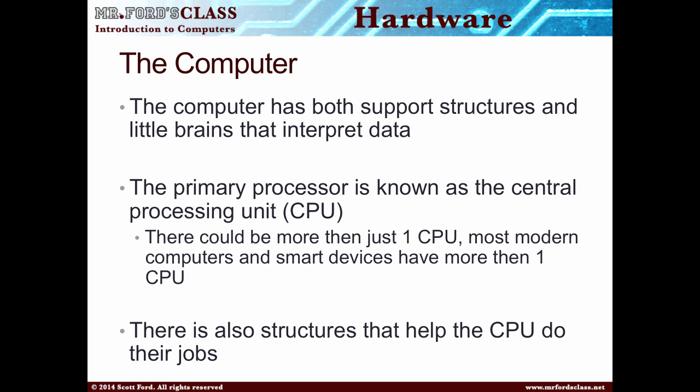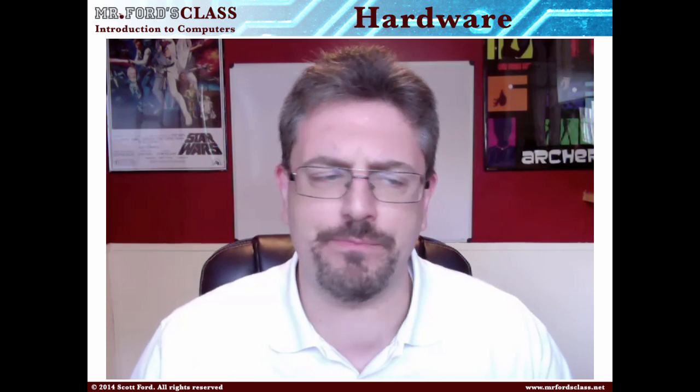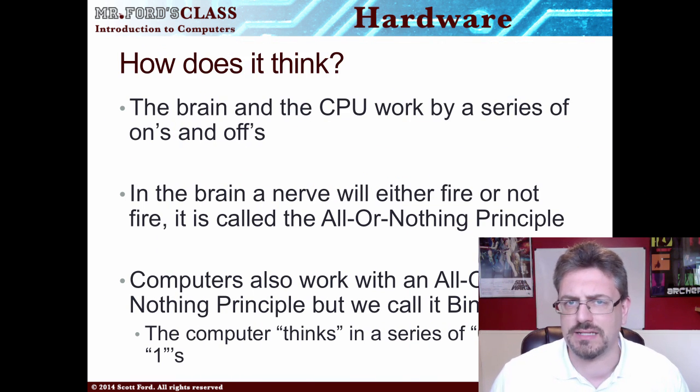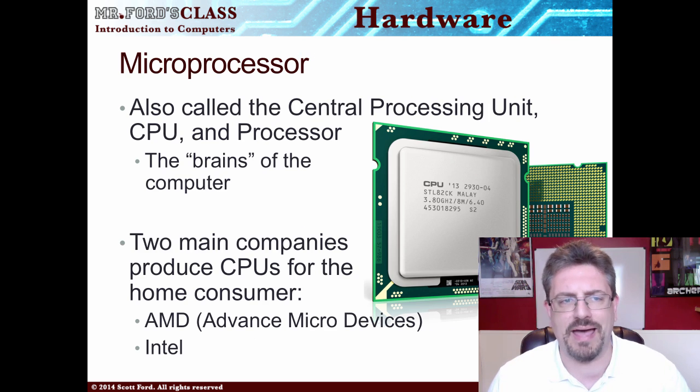There are also other structures that help the CPU do its job. How does a computer think? Just like the human brain, the brain either has a signal or doesn't have a signal — either neurons are firing or they're not firing. In the world of computers, remember we talked about binary and bits and bytes in the previous lesson? Information is either sent or it's not sent. You either have a one or a zero. So computers work via binary.